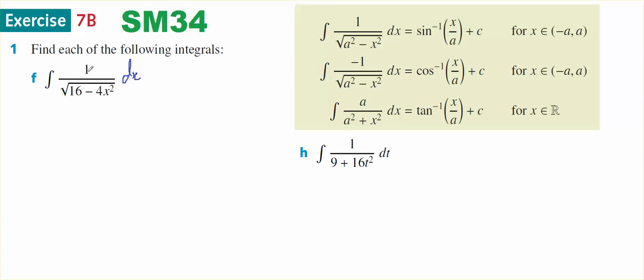It's a positive 1 over the square root, so I'm going to be using this rule here. Positive 1 on top, the square root of a squared minus x squared. I don't want a coefficient in front of the x squared, so that 4 has to be taken out as a common factor. So I'm going to do some algebra. I've got the integral of 1 over the square root of 4 bracket, 4 divided into 16 is 4, minus 4x squared divided by 4 is x squared, dx.